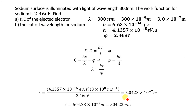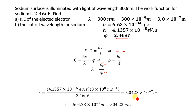For calculating the cutoff wavelength for sodium, the work function is 2.46 electron volt. Using this work function we can determine the cutoff wavelength. The work function represents energy, and that energy equals hc divided by lambda. Solving this equation for wavelength gives lambda equal to hc divided by the work function. Substituting the values for Planck's constant, speed of light, and work function, we get 5.0423 multiplied by 10 to the power minus 7 meters. Converting to nanometers gives 504.23 nanometers.